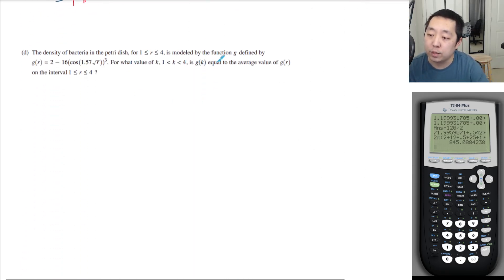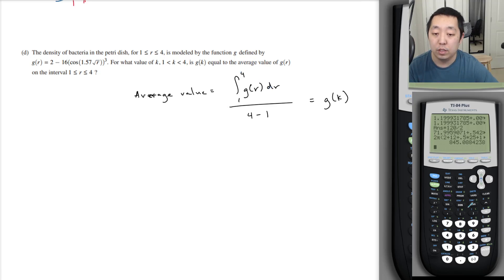The density of bacteria in the petri dish is modeled by the function g defined by g of r equals blah. For what value of k is g of k equal to the average value of g of r over the interval? So let's find the average value first. Average value over the interval would be the integral from the total area of g of r dr divided by the interval width, which is 3. And we want to set that equal to g of k.